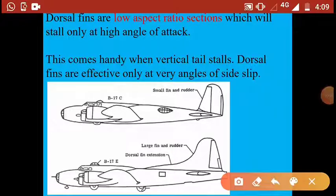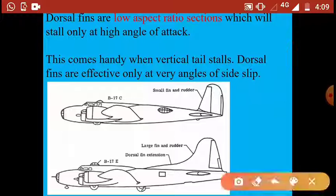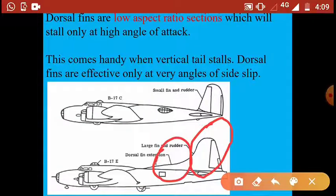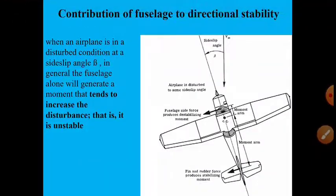Talking about the aspect ratio of the dorsal fin: the chord is large but the span is a very small value. For the vertical stabilizer, the chord is smaller and the span is larger, so its aspect ratio is bigger. At moderate sideslip angles, the vertical stabilizer is effective, but at very high sideslip angles, the dorsal fin comes into play to give directional stability.